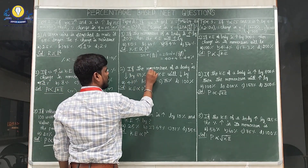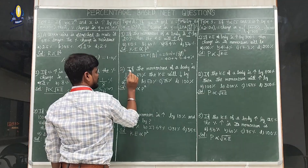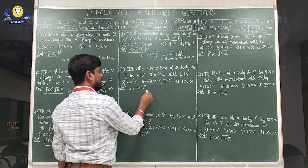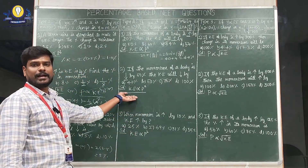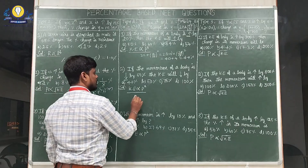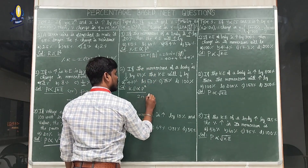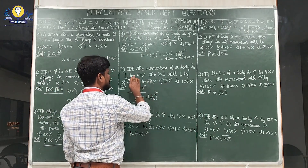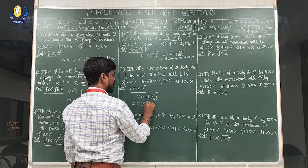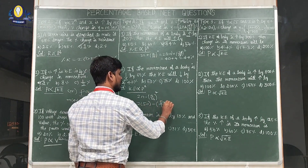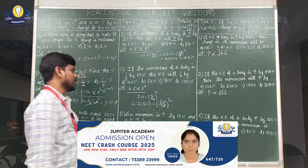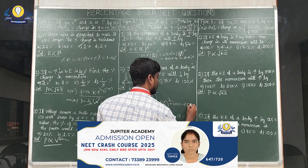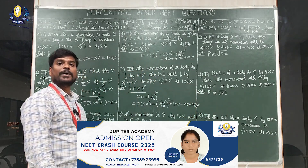Second question: if the momentum of a body is decreased by 50%, the kinetic energy will decrease by? Using the decrease formula: 2n − (n/10)², with n = 50: 2×50 − (50/10)² = 100 − 5² = 100 − 25 = 75%. So the answer is 75%.